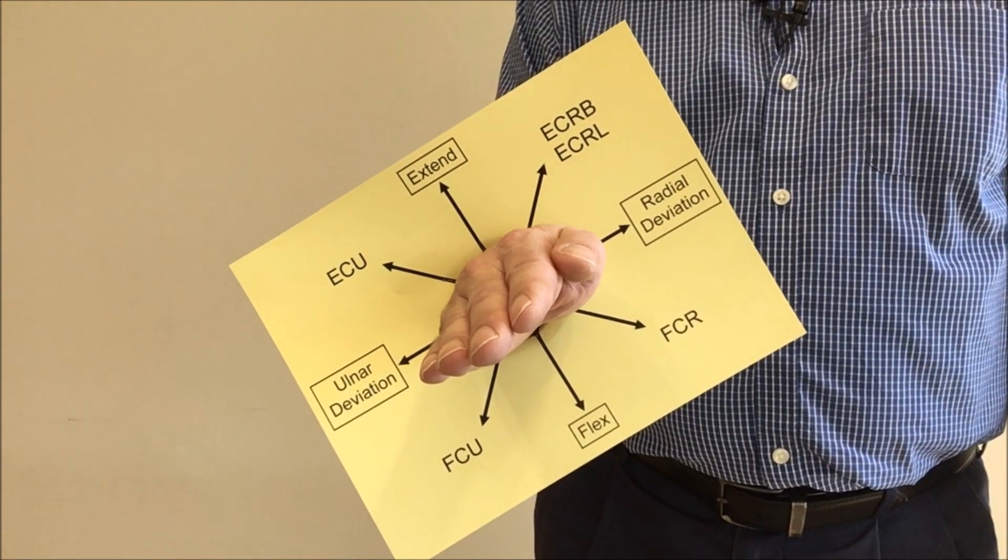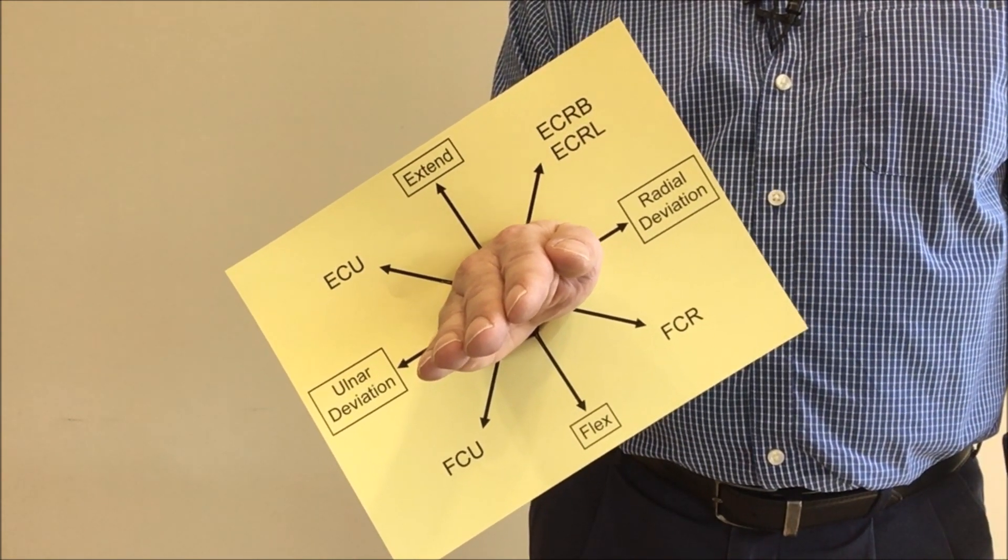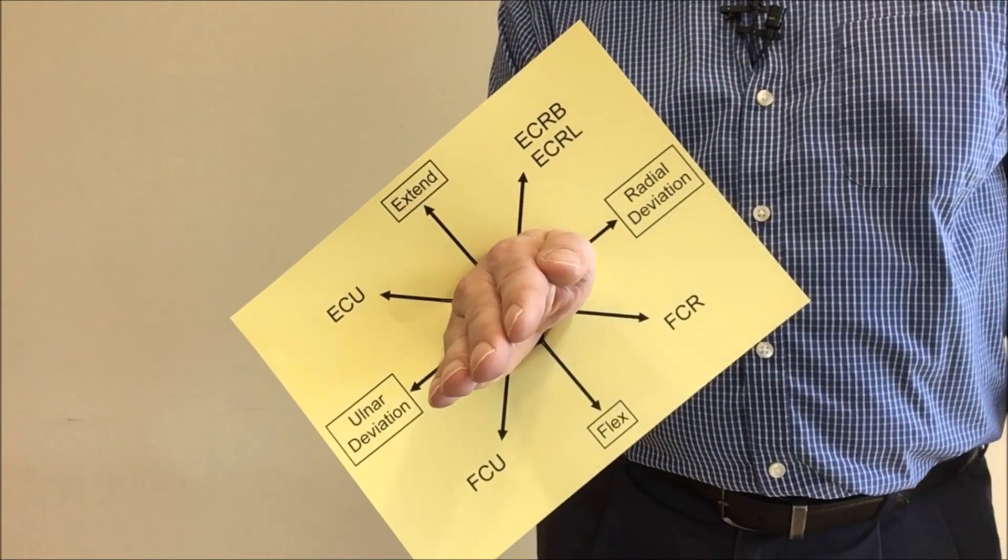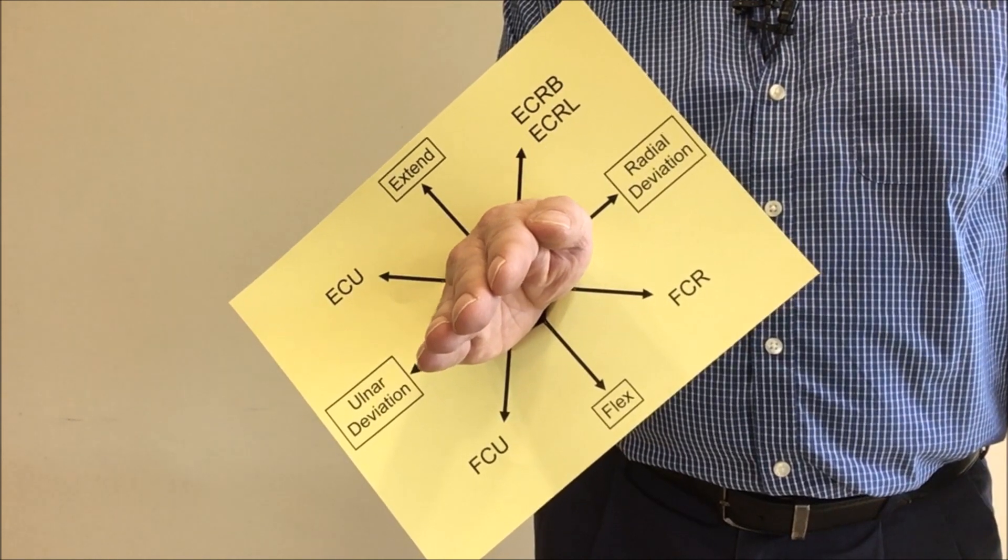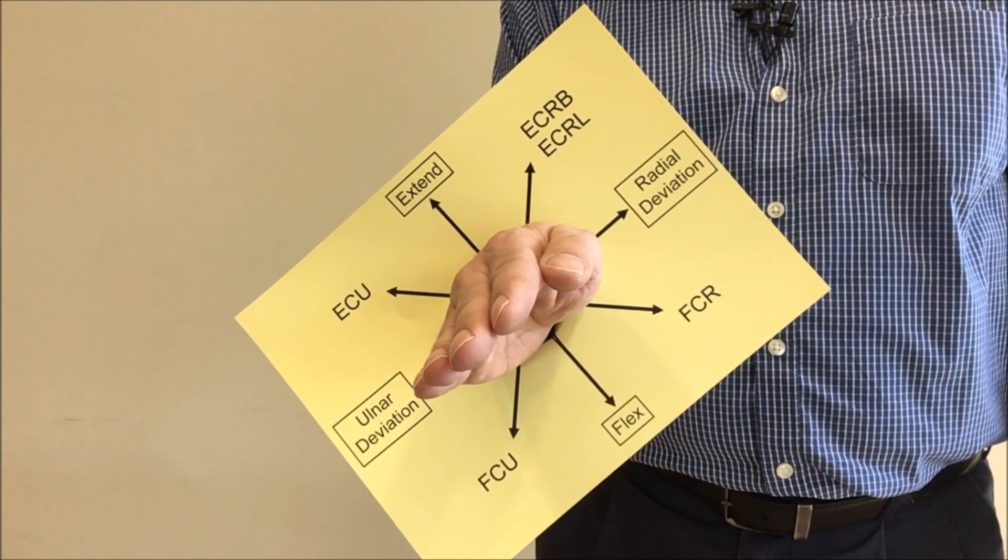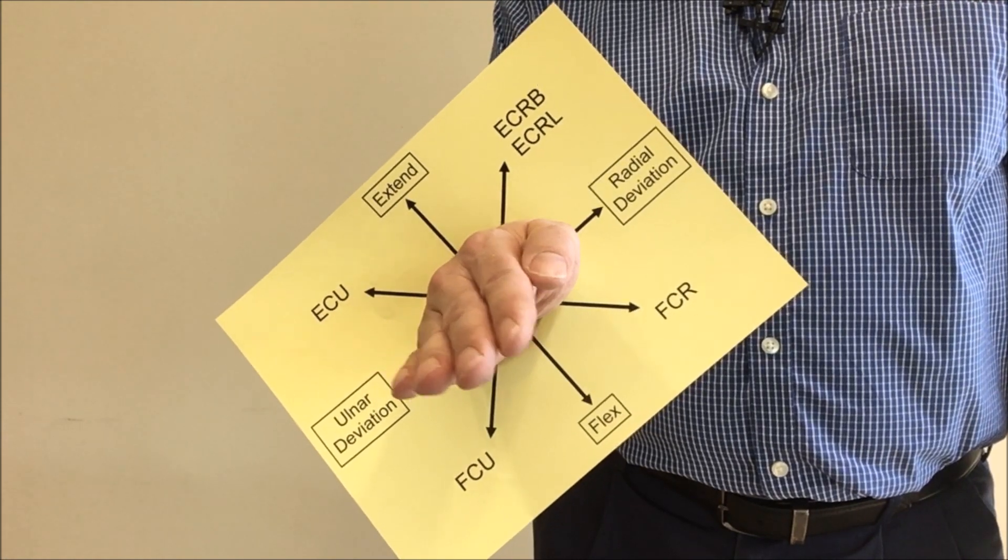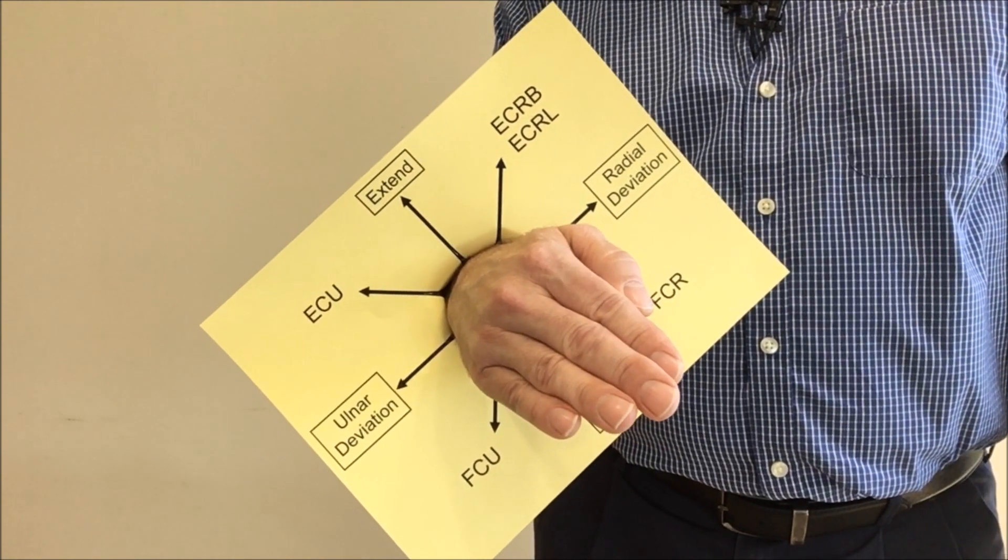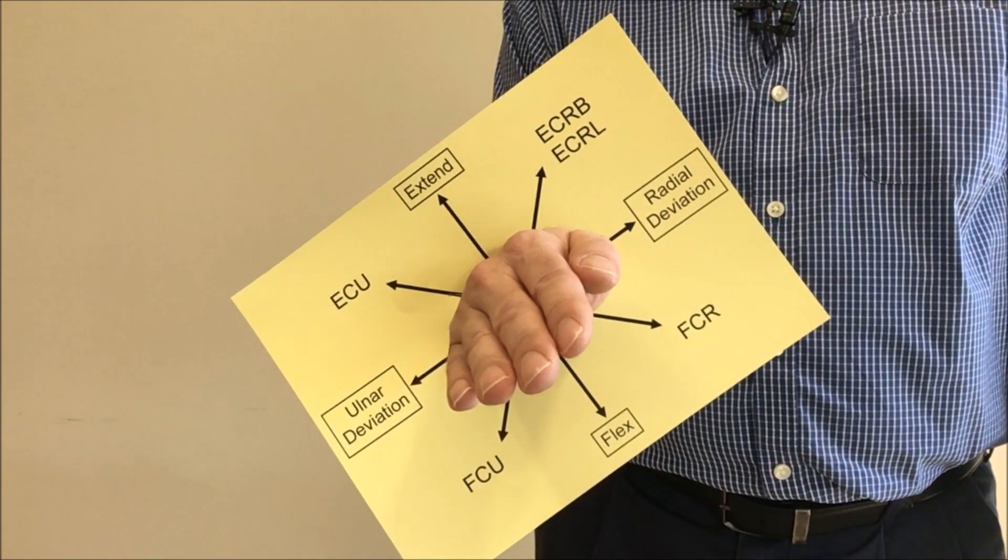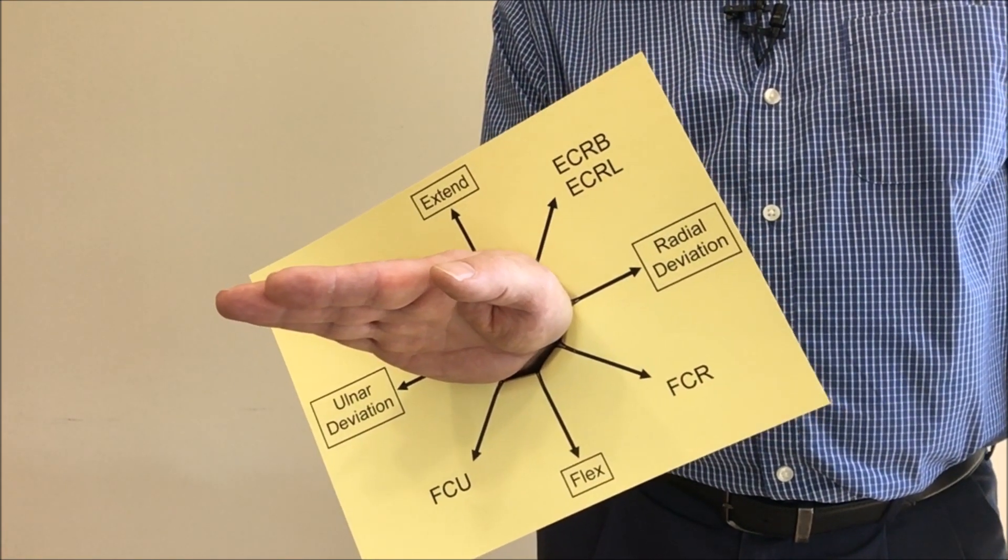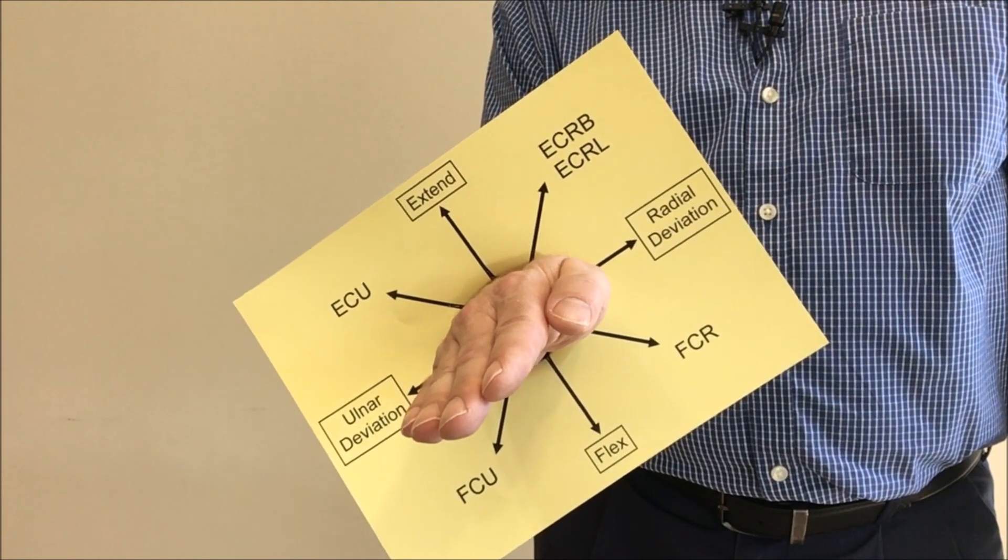Basically halfway between pronation and neutral, and now you'll see that those lines for the direction of pull for extensor carpi ulnaris and flexor carpi radialis are parallel to the floor. So if I move in the direction of flexor carpi radialis, I'm moving in a direction that's parallel to the floor. If I move in the direction of extensor carpi ulnaris, I move in a direction that's parallel to the floor.